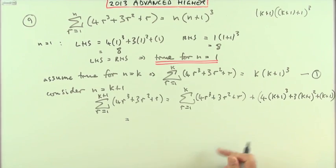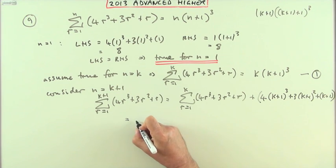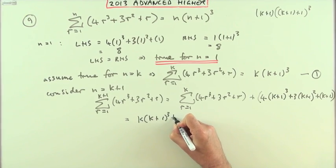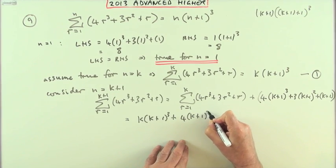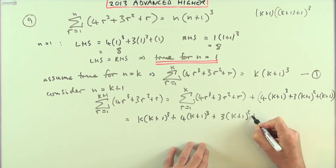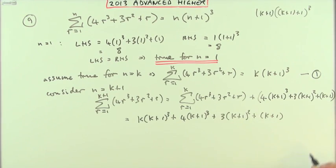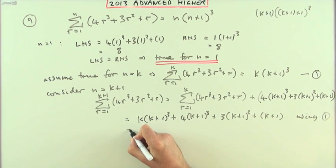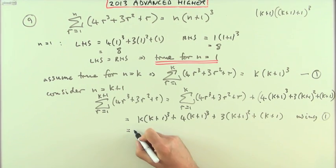So obviously this expression is going to become a quartic expression that I'll need to factorize down to this. Next step, I can replace that by this, that was the inductive hypothesis. So I've got k(k+1)³ plus 4(k+1)³ plus 3(k+1)² plus (k+1). That's using, take a note of it, 1. First thing I'll do is take out the common factor, which is k plus 1.